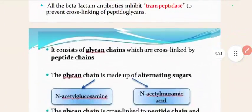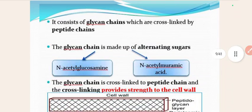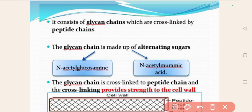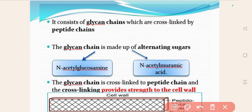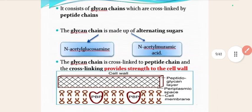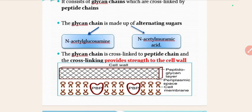When we say peptidoglycan, it consists of a glycan chain which is cross-linked by a peptide chain. There are peptide and glycan components. The glycan chain is made up of alternating sugars: N-acetylglucosamine and N-acetylmuramic acid. The glycan chain is cross-linked to the peptide chain, and this cross-linking provides strength to the cell wall.